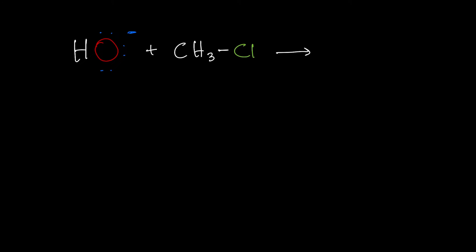What's going to happen in this situation is the negatively charged oxygen is going to approach the carbon. Keep in mind that the carbon is going to have a partial positive charge, and the chlorine is going to have a partial negative charge due to the fact that chlorine is more electronegative than carbon. So it's going to pull the electrons in the bond a little closer to itself.